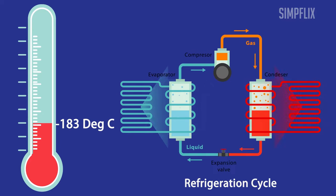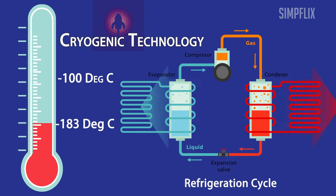Achieving this level of low temperature is very difficult using refrigeration technology, which is widely used in air conditioners and domestic refrigerators. So another technology called cryogenic technology is used to achieve this level of low temperature, which is normally below minus 100 degrees Celsius.